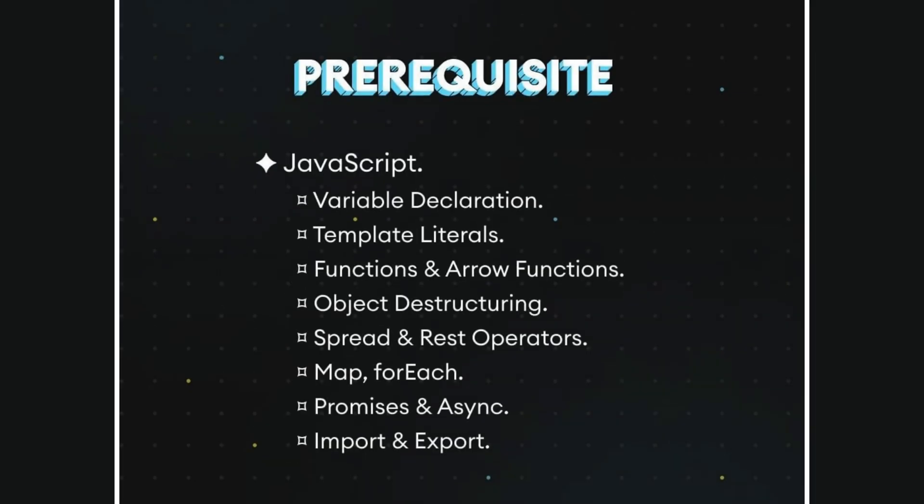JavaScript: variable declaration, template literals, functions and arrow functions, object destructuring, spread and rest operators, map, forEach, promises and async, import and export.